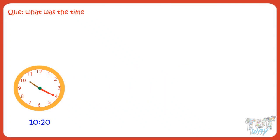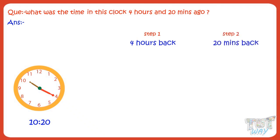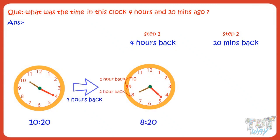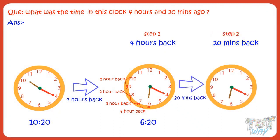Now, calculate what was the time 4 hours and 20 minutes ago. Again, we will calculate it in two steps. First, find the time 4 hours ago, then find the time 20 minutes ago. For finding the time 4 hours ago, move the hour hand: 10:20 to 9:20, 9:20 to 8:20, 8:20 to 7:20, 7:20 to 6:20. So 4 hours ago, the time was 6:20. Now, move the minute hand 20 minutes back: 4 to 3, 3 to 2, 2 to 1, 1 to 12. The time is 6 o'clock.